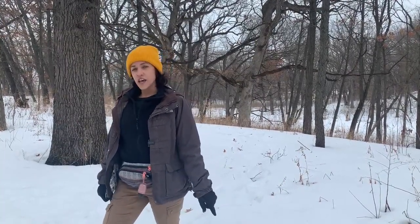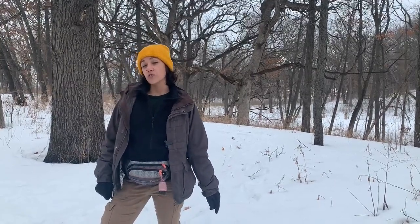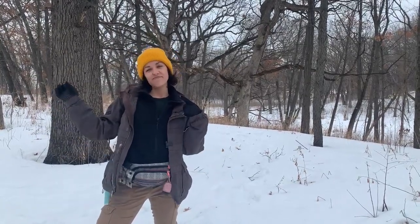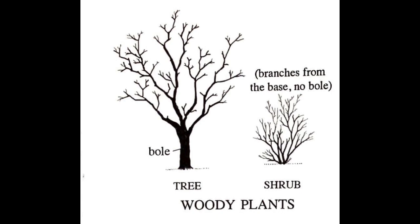Before we get into identification, let's go over some photos and definitions. The main difference between a tree and a shrub is the presence or absence of a bole, or a trunk. Trees generally have one stem or bole coming up from the ground, versus shrubs which have several branches coming up from the ground and do not have a bole.